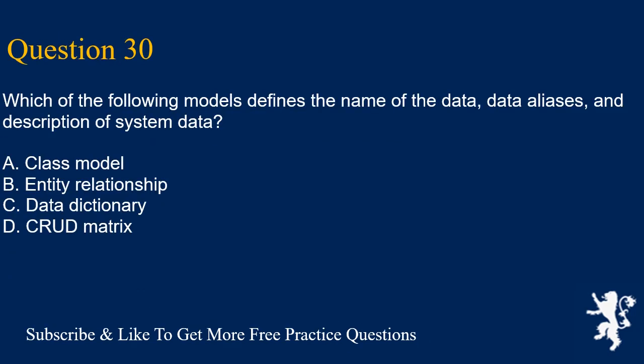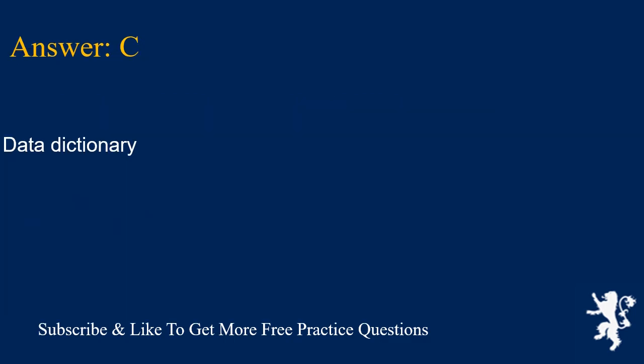Question 30: Which of the following models defines the name of the data, data aliases, and description of system data? A. Class model. B. Entity relationship. C. Data dictionary. D. CRUD matrix. Answer is C. Data dictionary.